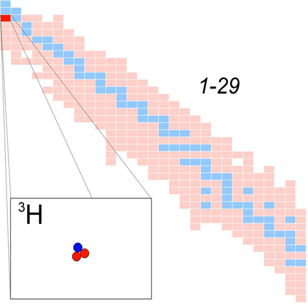The unusually low energy in the tritium beta decay makes the decay appropriate for absolute neutrino mass measurements in the laboratory. The low energy of tritium's radiation also makes it difficult to detect tritium-labeled compounds except by using liquid scintillation counting.